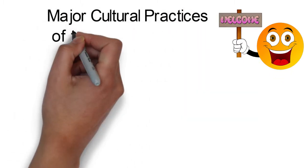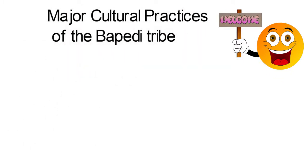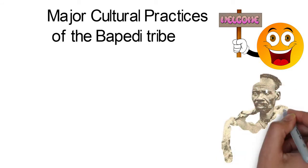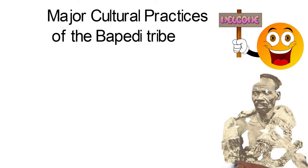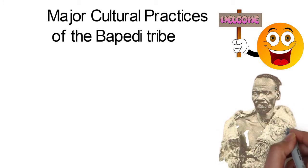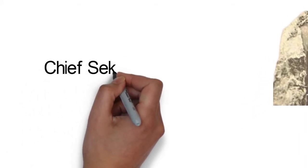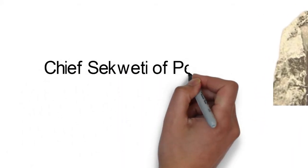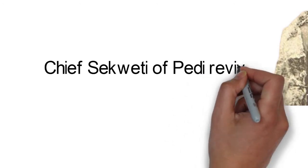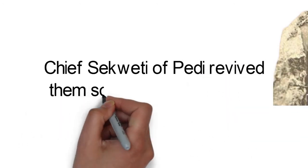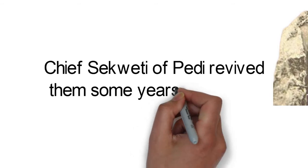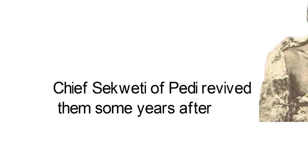Major Cultural Practices of the Bapedi Tribe. The Bapedi tribe, also known as Pedi or Basotho, began as small chiefdoms formed as far back as the 17th century. These chiefdoms were defeated in the 19th century by the armies of Mizilikazi. However, Chief Sekweti of Pedi revived them some years after.